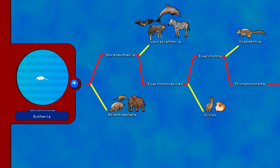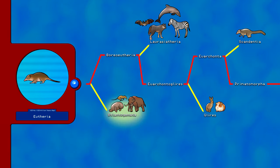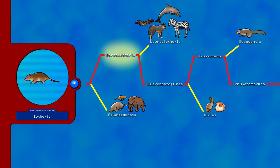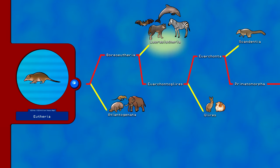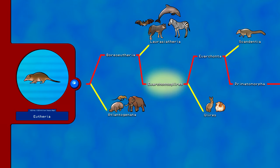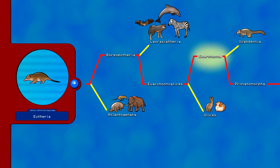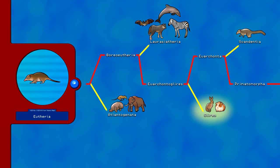Eutheria, also called Placentalia, are placental mammals and branched to separate Boreoeutheria from Atlantogenata, which includes many animals such as aardvarks, tenrecs, hyraxes, elephants, dugongs, manatees, anteaters, armadillos, and sloths. Boreoeutheria branched 80 to 100 million years ago to separate Euarchontoglires from the Laurasiatheria — a huge clade that includes hedgehogs, moles, bats, ungulates, whales, pangolins, bears, cats, and dogs. Euarchontoglires is the superorder that includes lagomorphs, tree-shrews, colugos, and primates, and it branched into Euarchontoglires and the Glires, which includes rodents, rabbits, and pikas.